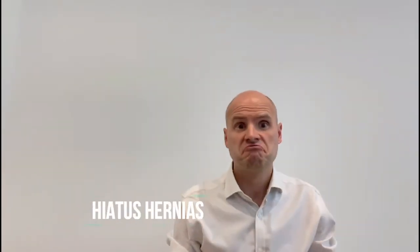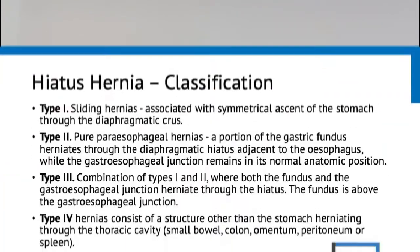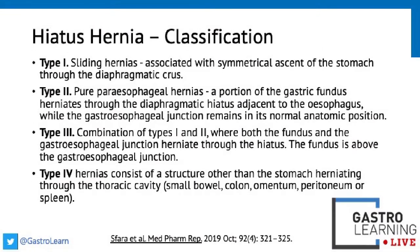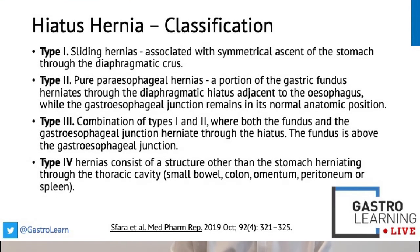I'm going to talk about hiatus hernias. Very simple, but we frequently get it wrong and it causes quite a lot of confusion. On a classification point of view, there are four main types of hiatus hernias, shown in this slide. Really 90% of the hernias are type 1, the classic sliding hiatus hernia. The rest — type 2 to type 4 — are different types of paraesophageal hernia outlined here.